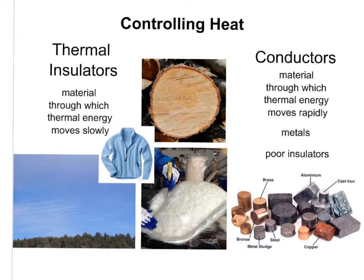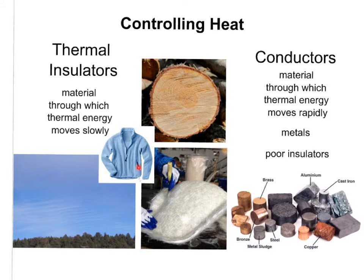Metals are very poor insulators. An insulator is a poor conductor — a material through which thermal energy moves slowly. Air is a very good insulator; it does not conduct heat well. Neither does wood or fiberglass. The fibers in a fleece jacket actually trap air next to you, and since air is a good insulator, thermal energy is not transferred quickly.